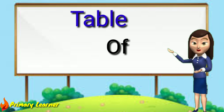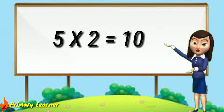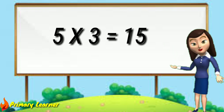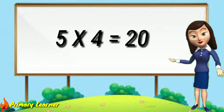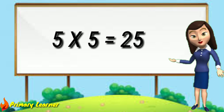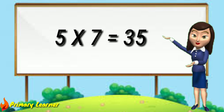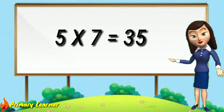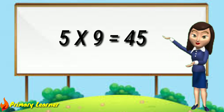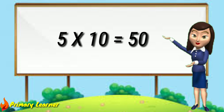Table of 5. 5 ones are 5. 5 twos are 10. 5 threes are 15. 5 fours are 20. 5 fives are 25. 5 sixes are 30. 5 sevens are 35. 5 eights are 40. 5 nines are 45. 5 tens are 50.